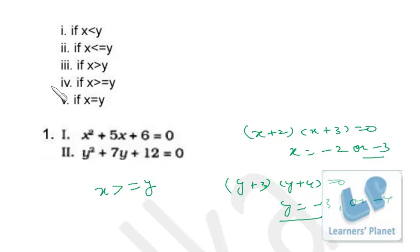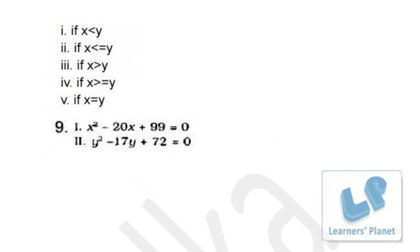So x is greater than or equal to y. This will be the correct choice. Similarly, we can see this. Just factorize it. It's (x - 11)(x - 9) = 0, so x is 11 or 9.